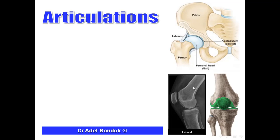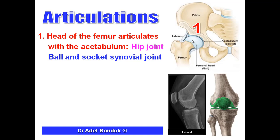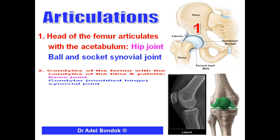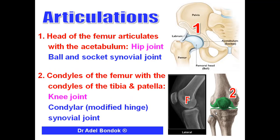Articulations of the femur: the upper end articulates with the hip bone. The head of the femur articulates with the acetabulum of the hip bone to form the hip joint, which is a ball-and-socket synovial joint. The lower end: the condyles of the femur articulate with the condyles of the tibia and with the patella to form the knee joint, which is a condylar or modified hinge synovial joint.